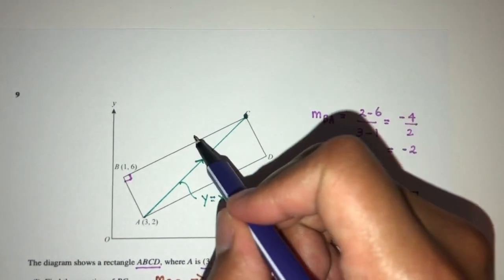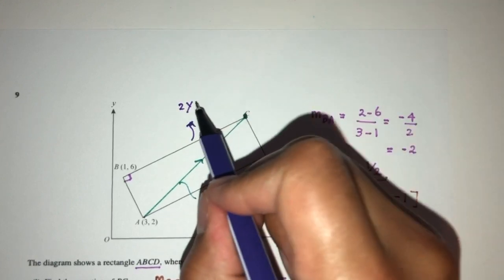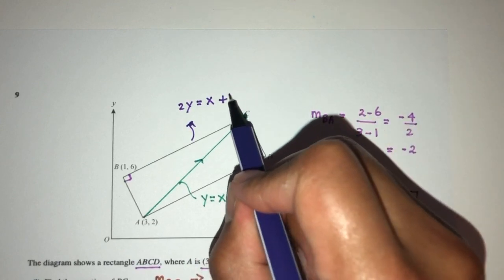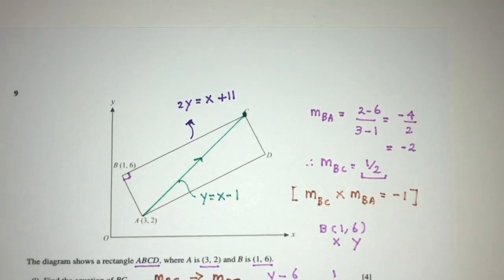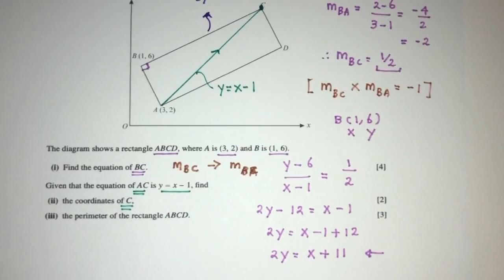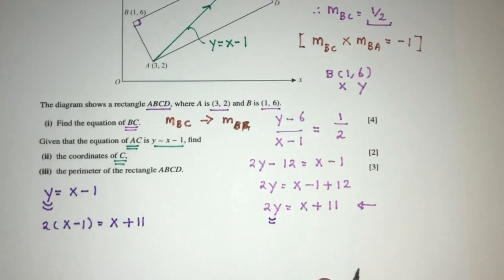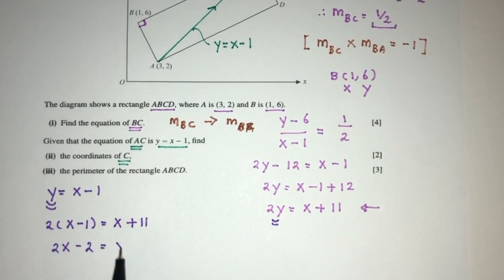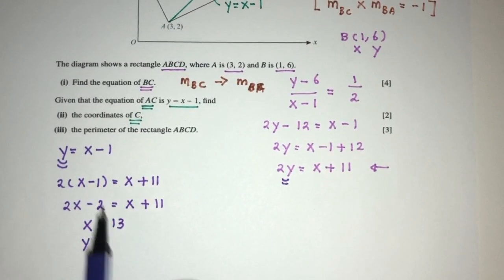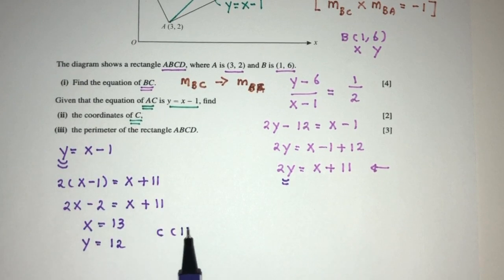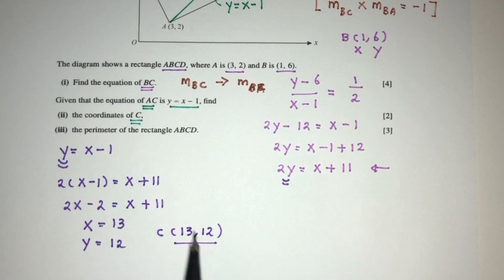So we have equation number 1 and equation number 2 was found to be 2Y equal to X plus 11. So we have to solve this step by step to find the value of the coordinates of C. So here we have Y is equal to X minus 1. We place Y in this Y. You will have 2 times Y, which is X minus 1, is equal to X plus 11. So simplify. That will be 2X minus 2 equals X plus 11. So send this over becomes 2X minus X will be X. Send this over will be 13. So X will be 13. Now the value of Y will be 13 minus 1. That should be 12. So the point C will be simply (13, 12). That is my point C for part 2 of the question.